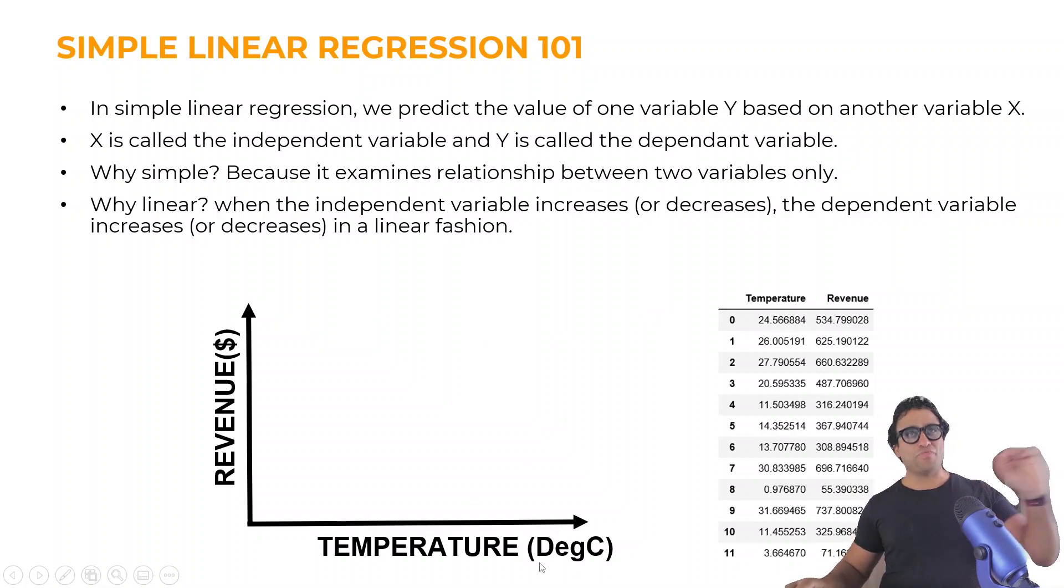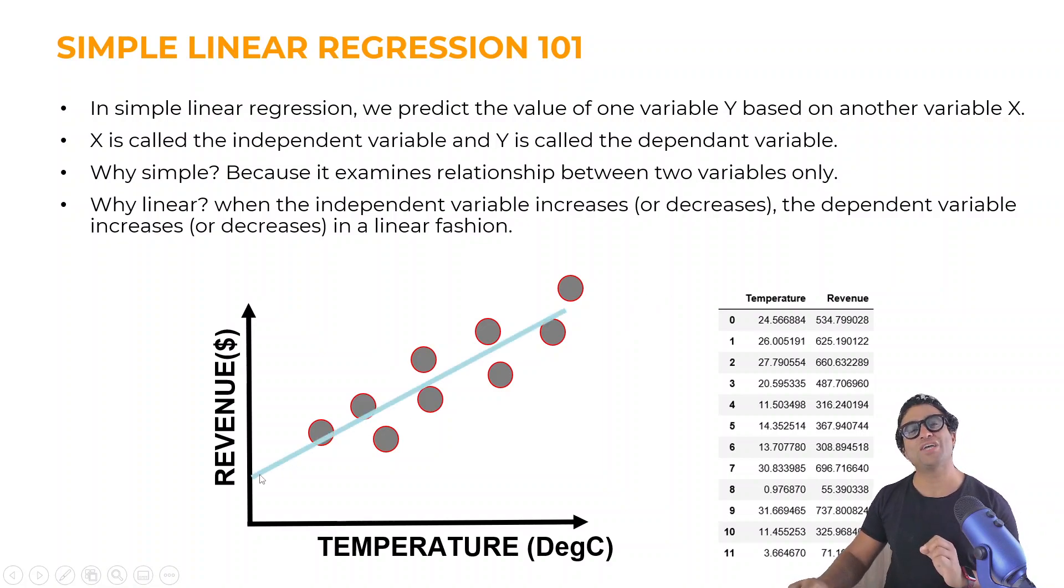So on the x-axis, we put the temperature, and on the y-axis, we put the revenue. And then you plotted here all these different data points. And as I mentioned before, our objective is to try to come up with that straight line that best fits our data points. So let's dig a little bit deeper and cover the math behind this straight line.